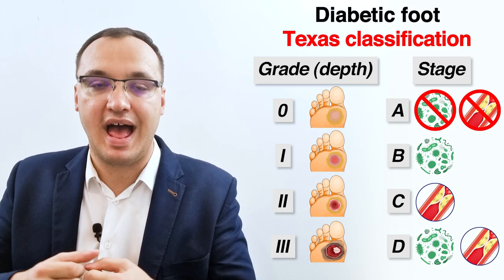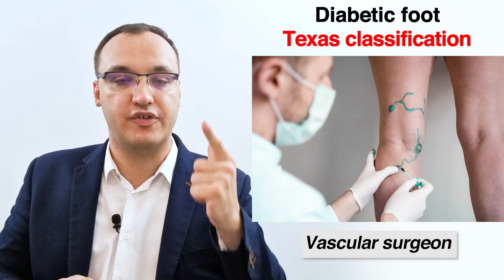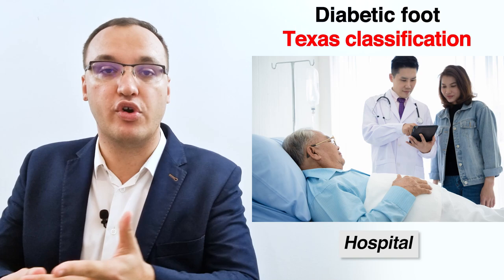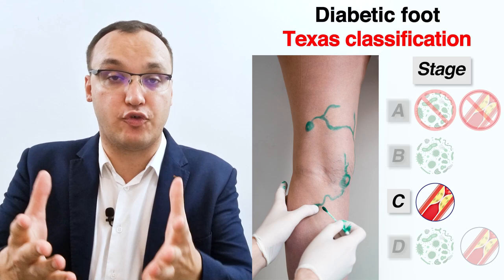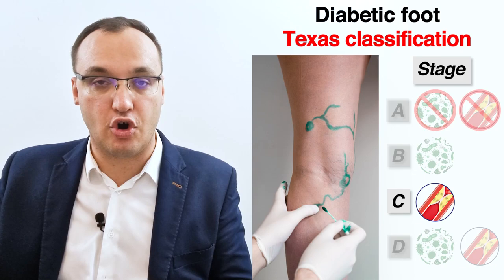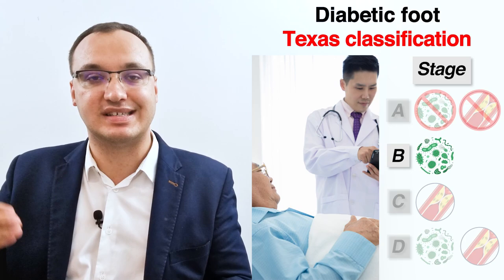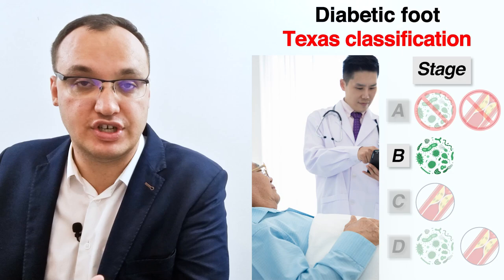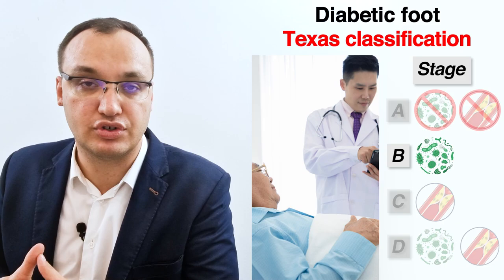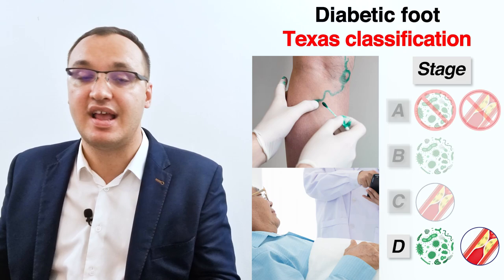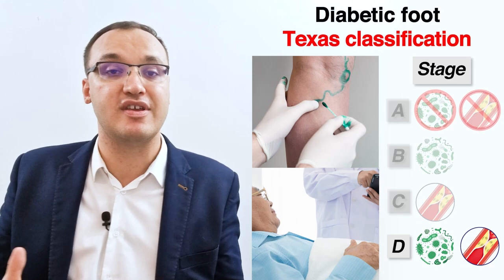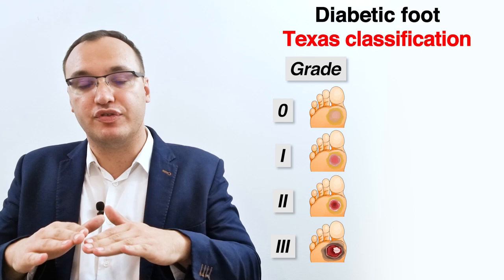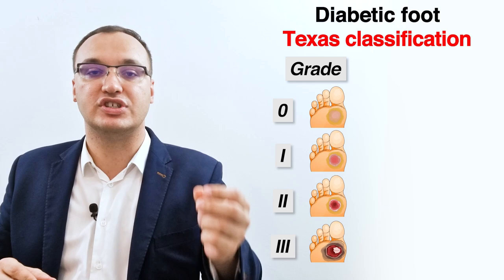As a family doctor, when the patient comes in, I need to decide where to send them. If the patient has stage C — meaning the vascular system is involved with peripheral artery disease — I send the patient to the vascular surgeon. If the patient has stage B, which is infection, I send them to the hospital, to an infectologist or internal medicine department for intravenous antibiotics. If the patient has stage D — both infection and peripheral artery disease — we need to collaborate with both the vascular surgeon and the infectologist. And depending on the grade, we decide whether the patient needs a general surgeon.